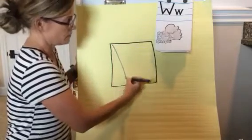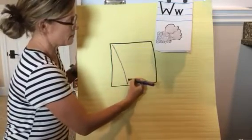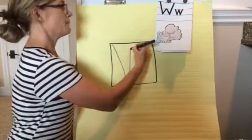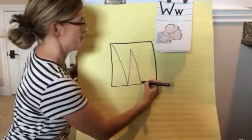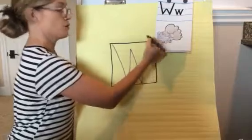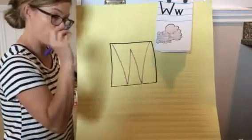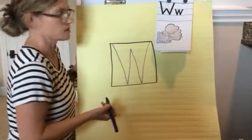I'm going to do a diagonal line down, bounce back up, bounce back down, and bounce back up. No frog jumps at all. My pencil or pen stays on the whole time.